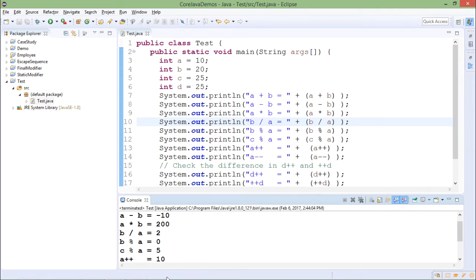If I divide 20 by 10, the remainder will be 0, so b mod a will be 0. c mod a will be 5 because if I divide 25 (which is c value) by 10 (which is a value), the remainder will be 5.